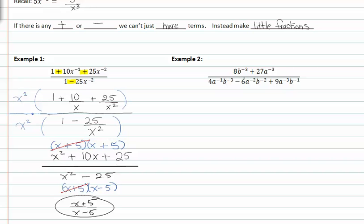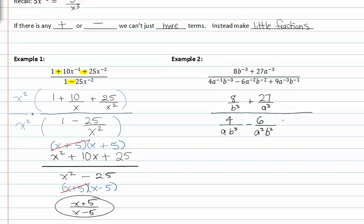In example two, I have negative exponents, so I'll rewrite them as little fractions: eight over b to the third plus twenty-seven over a to the third. In the denominator, I have four over a, b to the third, minus six over a squared, b squared, plus nine over a to the third, b to the third.